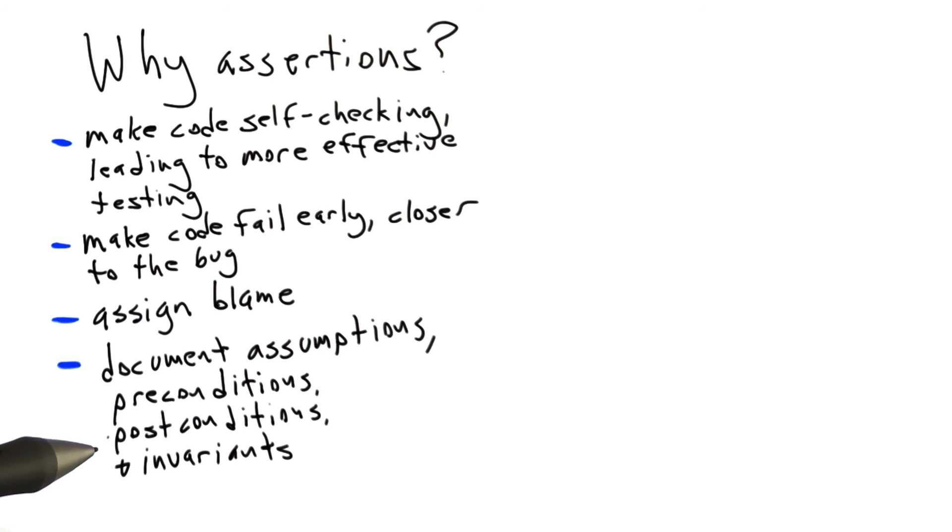Post conditions are things that are supposed to be true after our code runs. And again, in addition to creating executable checks for these, we're also telling other developers what we think should be true. And this should allow other people to rely on these post conditions. And invariants are closely related to preconditions and post conditions. These are things that need to be true, for example, at every iteration of a loop.